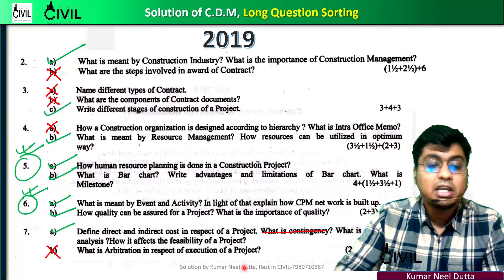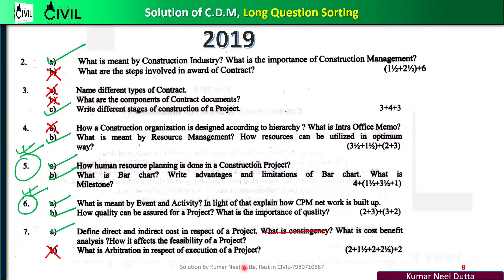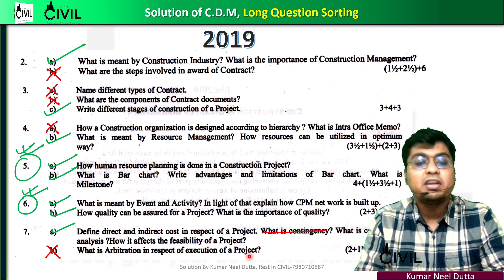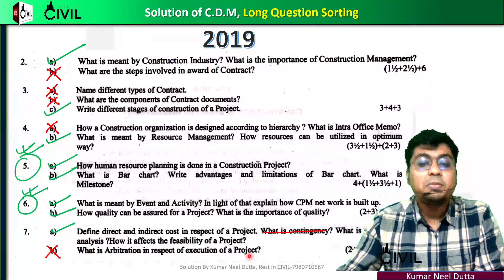Next, we have a question about cost management: direct cost, indirect cost, contingency, cost-benefit ratio. Cost-benefit ratio — we have to say that you have to do a project, that you have to calculate the cost involved.